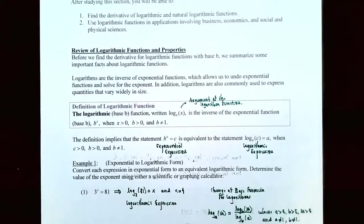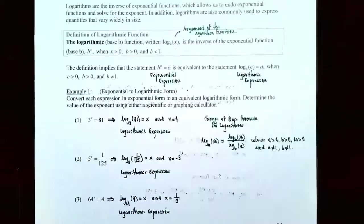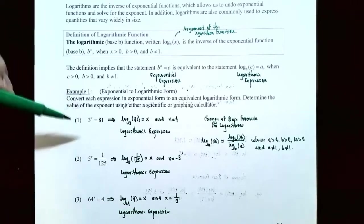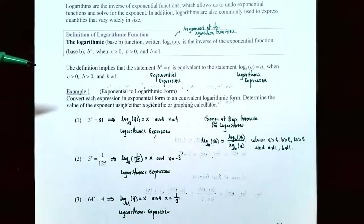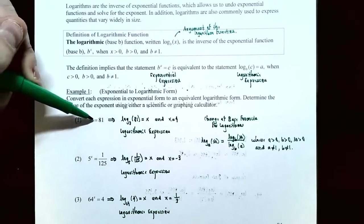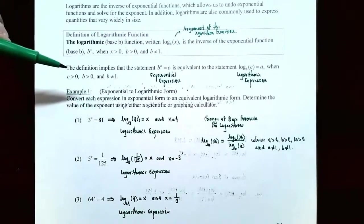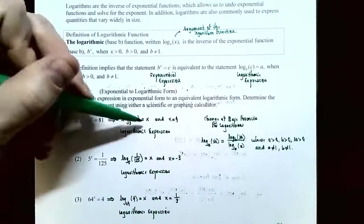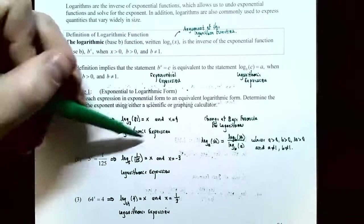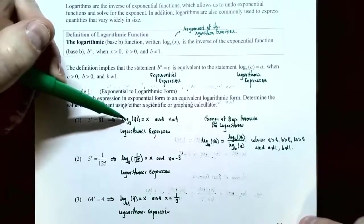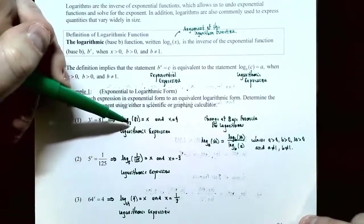Let's get some practice converting between exponential form and logarithmic form and then evaluating the exponent. Example one: convert each expression in exponential form to an equivalent logarithmic form, then determine the value of the exponent. Number one: 3 to the x power equals 81. This is base 3 exponential form, so it becomes log base 3 of 81 equals x. These two statements say exactly the same thing. To find x, what is the exponent on base 3 that gives you 81? It's 4.